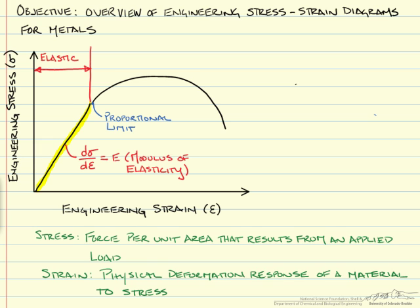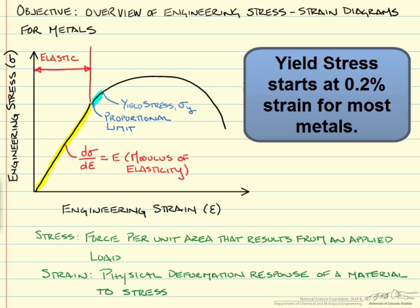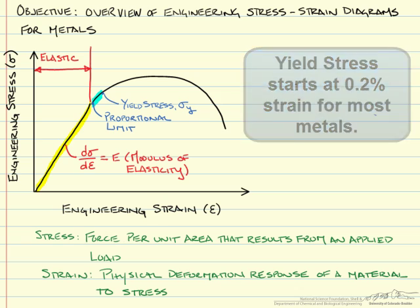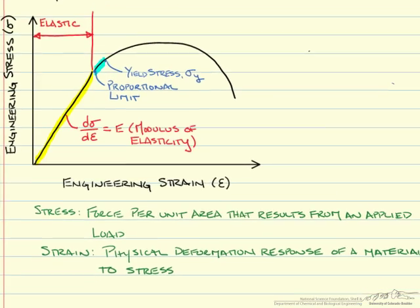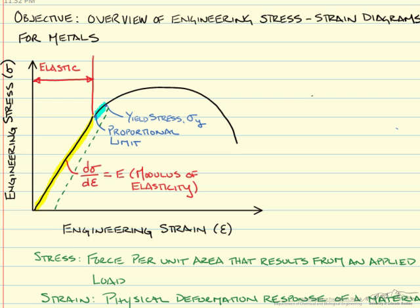With a little more loading past our proportional limit, we will have noticeable permanent deformation that takes place in our test specimen. This point is our yield stress — the stress associated with this point. Yield stress starts at 0.2% strain for most metals. What this means is, if we stop our tensile test and unload the specimen, we find the engineering strain is 0.002.